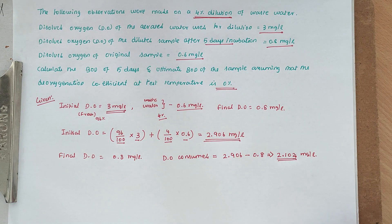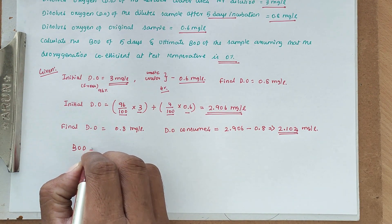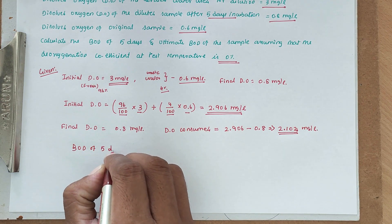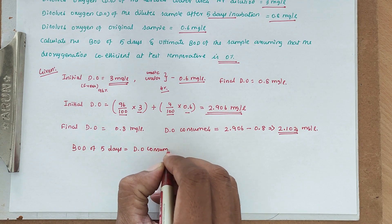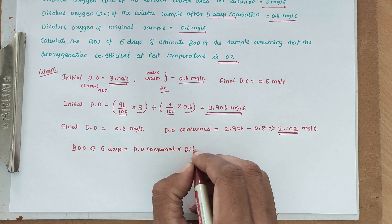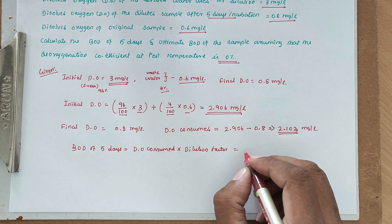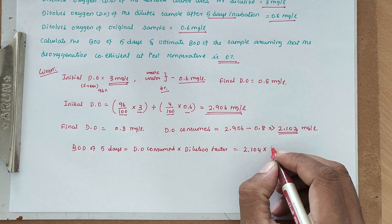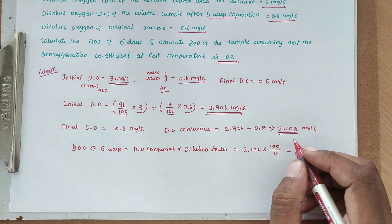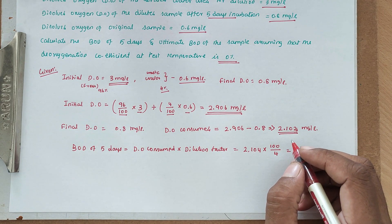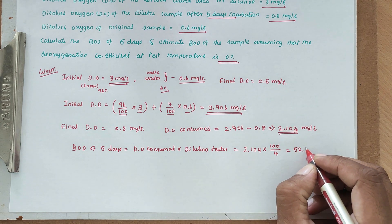Now we have to find out the 5-day BOD. BOD at 5 days equals DO consumed multiplied by the dilution factor. That is 2.104 × (100/4), since only 4% is wastewater and the remaining 96% is fresh water. So we get a value of 52.6 mg/L.